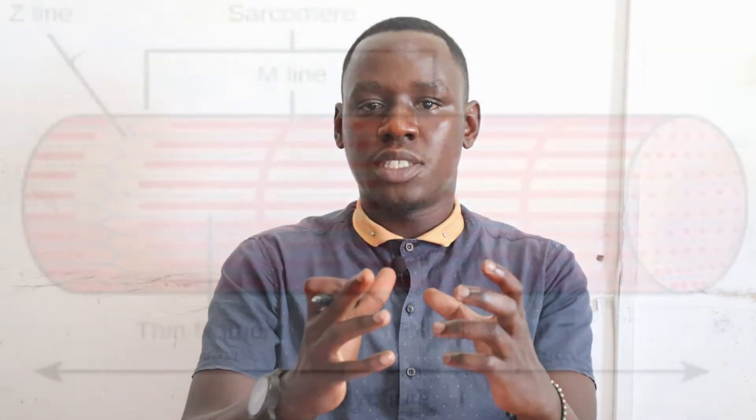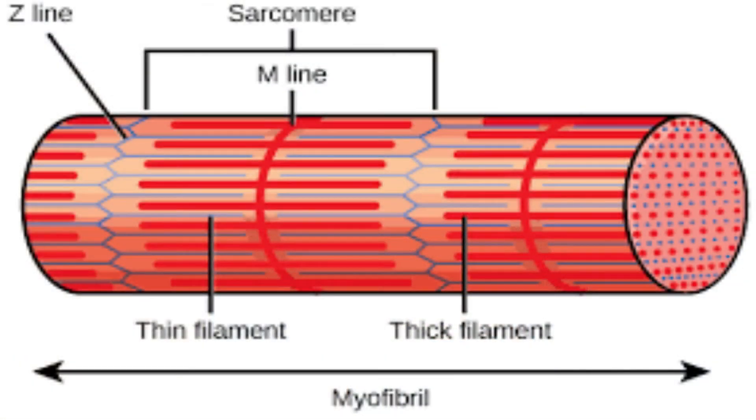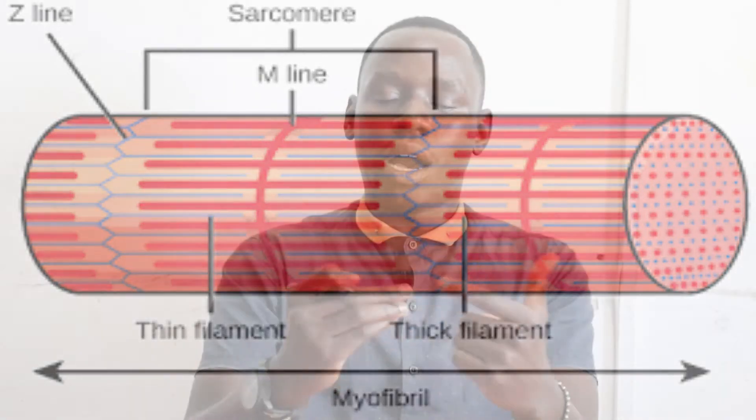A muscle does not contract wholly. We have contractile units in a muscle that we are calling sarcomeres, and in these sarcomeres is where we have these filaments. We have two types of filaments: actin, which is thin, and myosin, which is thick. Each of these filaments has properties that help in the attachment and sliding so that we end up with a contraction that leads to muscle contraction.